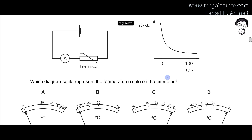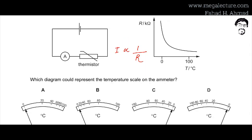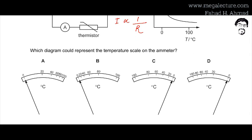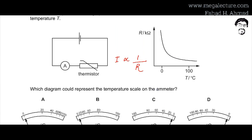We need to figure out which diagram represents the temperature scale on the ammeter. From V = IR, current I is inversely proportional to resistance R. So we need to predict how the current value varies and how the temperature scale would be plotted on the ammeter.